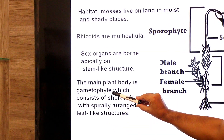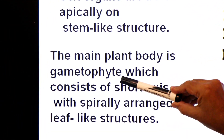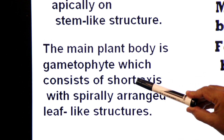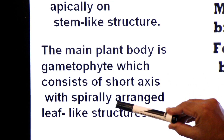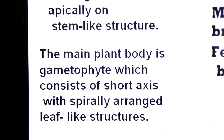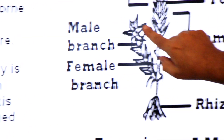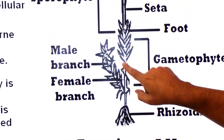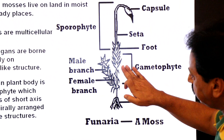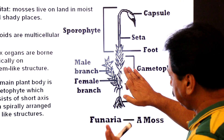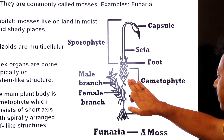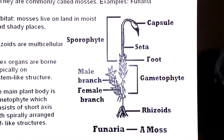The main plant body is the gametophyte, which produces gametes, consisting of a short axis with spirally arranged leaf-like structures. These are not true leaves due to the absence of xylem and phloem, but they are called leaf-like structures.